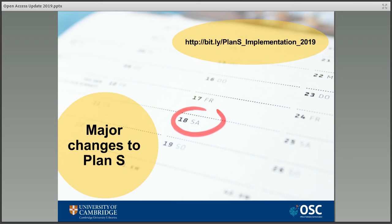In line with this delay, the transformative agreements that are part of the plan will be supported until 2024 — again, another one year delay. Plan S no longer supports hybrid models of open access publication, where selected articles in otherwise subscription publications are made openly available in exchange for a fee. Under these transformative agreements, the publisher agrees to transform titles into fully open access publications within a clearly defined time period, taking into account feedback from publishers about the range of different publishing models currently in use.